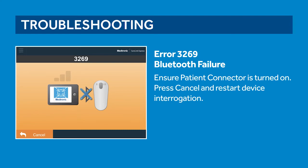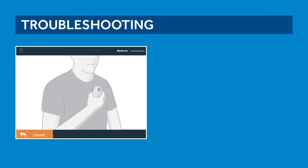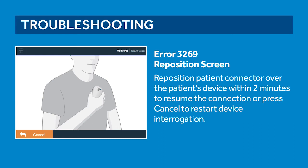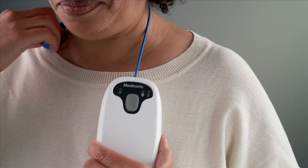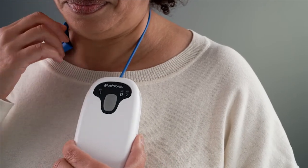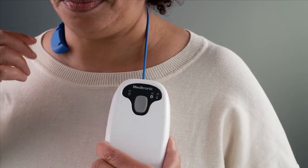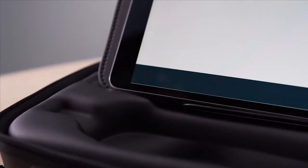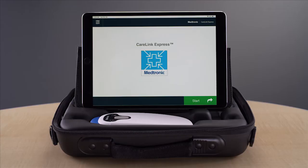If this happens, ensure the patient connector is turned on, press cancel, and restart the device interrogation. If you see this screen, it means a temporary interruption of the telemetry connection. In this case, you'll need to reposition the patient connector over the patient's device within two minutes to resume the connection, or press cancel to restart the device interrogation.